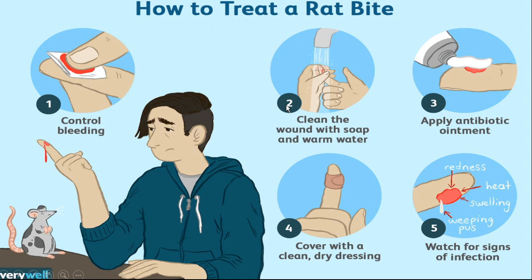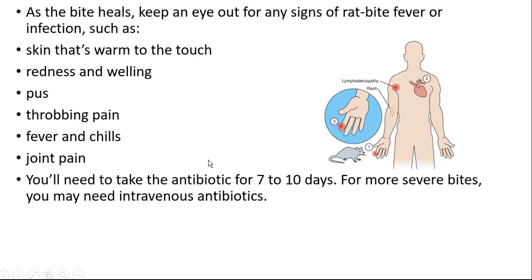To summarize the treatment steps: first, control bleeding; second, clean the wound with warm water and soap; third, apply antibiotics; fourth, cover with a clean dry bandage or dressing; fifth, watch for signs of infection. Signs of infection in the wound include redness, heat, swelling, and weeping pus.